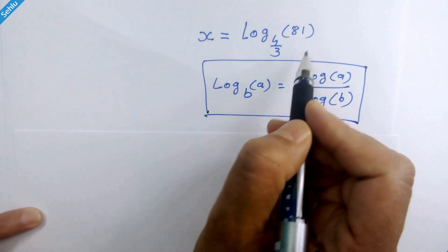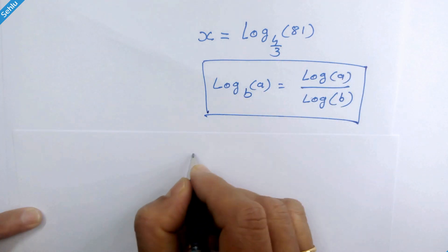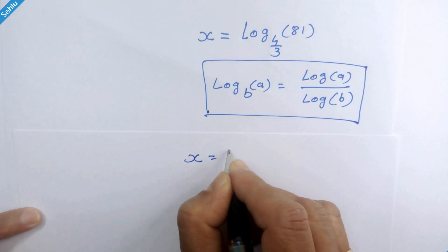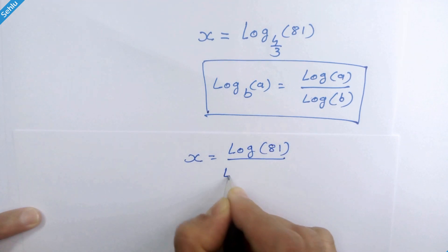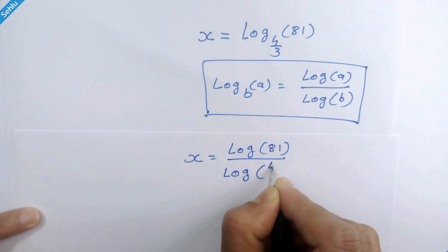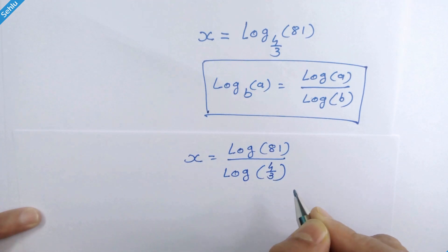So we can write this expression as x is equal to log of 81 over log of 4 over 3. And this can be declared as an answer. But let's simplify more.